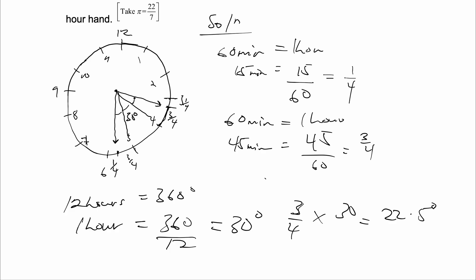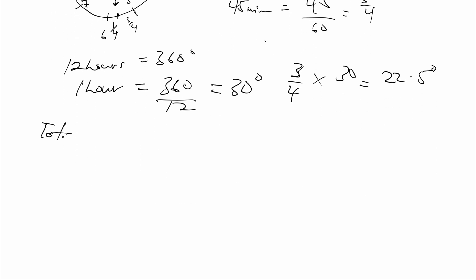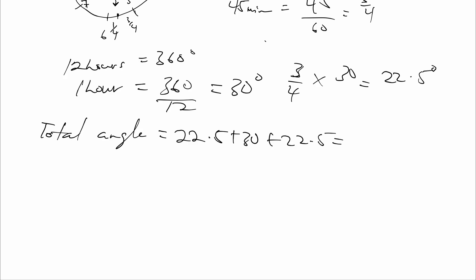So the angle here will be 22.5 degrees. Also, from here to here is 3 over 4 of 30, which is also 22.5 degrees. So the total angle from here to here will be 22.5 plus 30 plus 22.5, and that will be equal to 75 degrees.